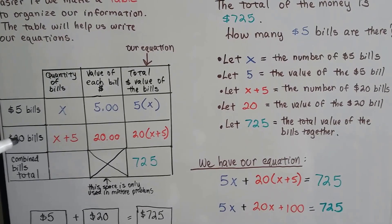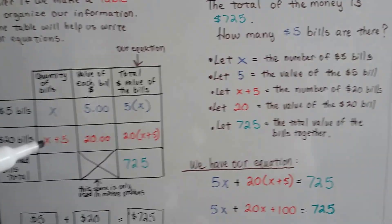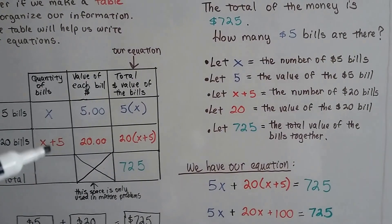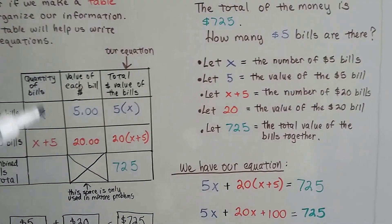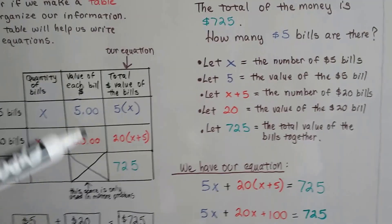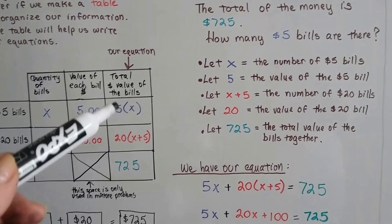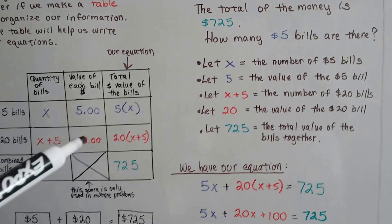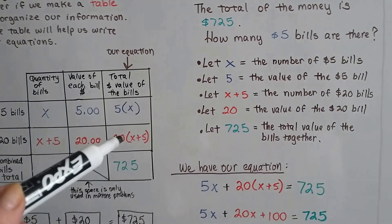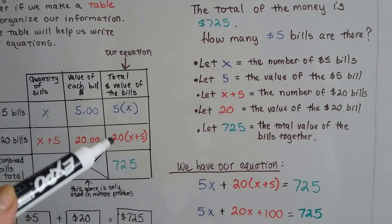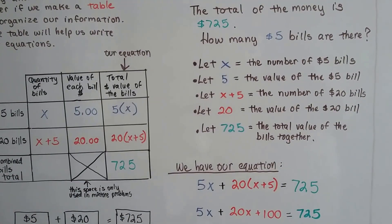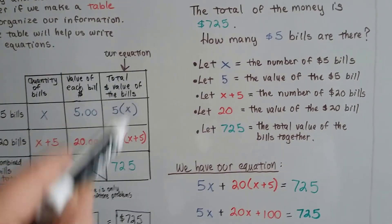This column is the $20 bills, we're going to let the X plus 5 equal the amount of $20 bills, that's the quantity of them. And that's the value of it, it's a $20 bill, it's 20. Then we would multiply X plus 5 times the 20 for this column for the total dollar value and the number of bills. And here's our equation right here.